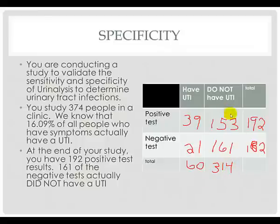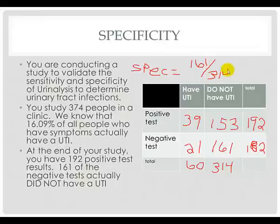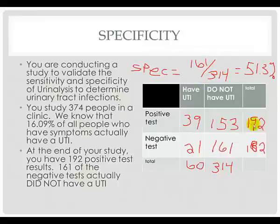Specificity deals with the people who don't have the disease — the ability of the test to correctly identify those who do not have the disease. We take the people who are correctly identified as having a negative test result and did not have the disease — those true negatives, 161 — divided by 314 total people who did not have a urinary tract infection. That gives us a specificity of 51.30%. Once we have the information in the 2x2 table, it's fairly easy to calculate sensitivity and specificity.